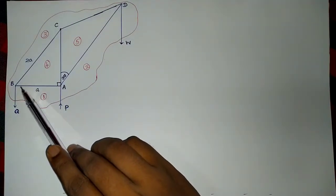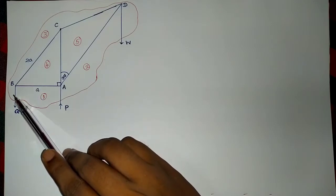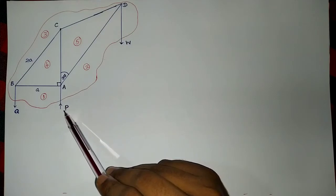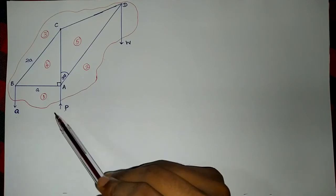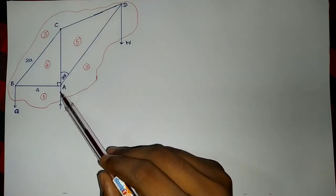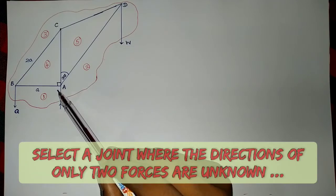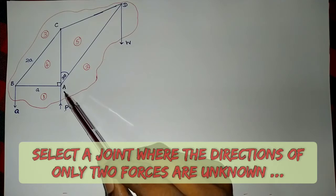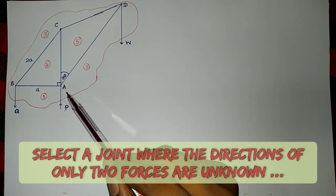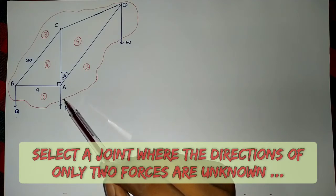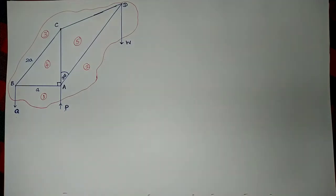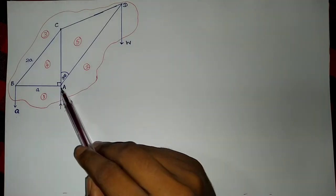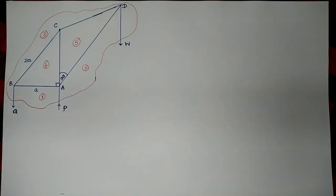At joint B we have three unknown forces. Even though the magnitude is unknown for P and Q, their directions are known. So the second step is to select a joint with only two unknown forces — that means only unknown direction. Magnitude is not important. If we know the direction of the force, it is considered as a known force. So at A we have four forces, three of which are unknown.